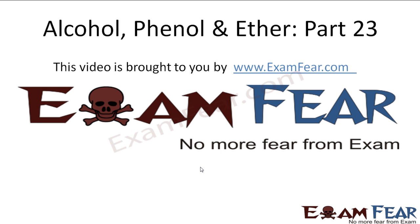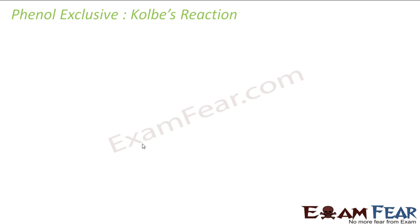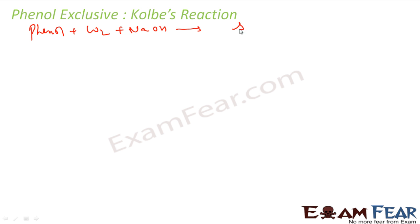Hello friends, this video on alcohol, phenol and ether part 23 is brought to you by examphia.com. We'll see the next reaction called the Kolbe reaction. Here we have phenol, carbon dioxide, and sodium hydroxide — and we get salicylic acid.